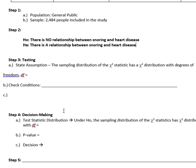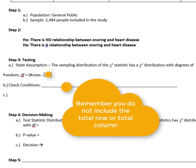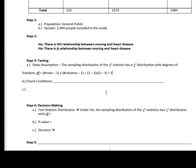In Step 3, for testing we are going to have to assume that the sampling distribution of the chi-square statistic is a chi-square distribution with degrees of freedom equal to number of rows minus one times number of columns minus one. For this problem we have two rows, snorers and non-snorers, and we have two columns, yes heart disease and no heart disease. So I come up with one degree of freedom.